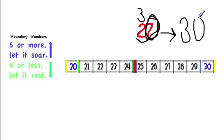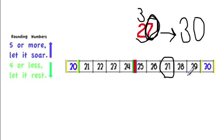27 rounded to the nearest 10 is 30. And if I look at my number line, 27's two boundary numbers are 20 and 30, and this number is closest to 30.